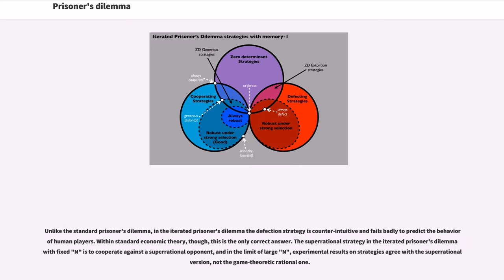Unlike the Standard Prisoner's Dilemma, in the Iterated Prisoner's Dilemma the defection strategy is counterintuitive and fails badly to predict the behavior of human players. Within Standard Economic Theory, though, this is the only correct answer. The superrational strategy in the Iterated Prisoner's Dilemma with fixed N is to cooperate against a superrational opponent, and in the limit of large N, experimental results on strategies agree with the superrational version, not the game-theoretic rational one.